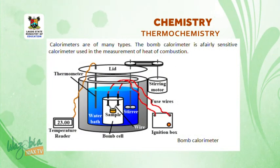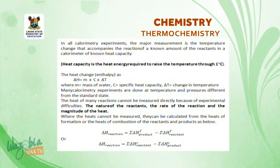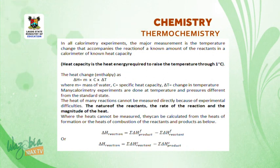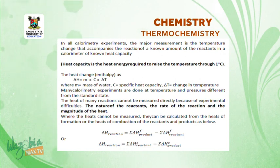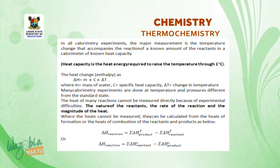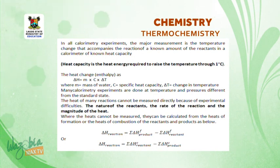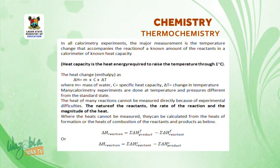The bomb calorimeter is a fairly sensitive calorimeter used in the measurement of heat of combustion. In calorimetry experiments, the major measurement is the temperature change that accompanies the reaction of a known amount of reactants in a calorimeter of known heat capacity. Heat capacity is the heat energy required to raise the temperature through one degree Celsius. The heat enthalpy is given as delta H equals M multiplied by C multiplied by delta T, where M equals the mass of water, C equals the specific heat capacity, and delta T is the change in temperature. Many calorimeter experiments are done at temperatures and pressures different from the standard states.